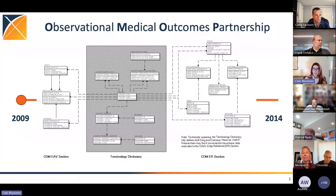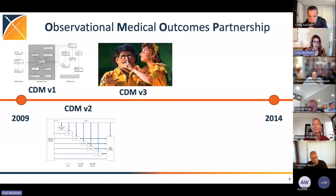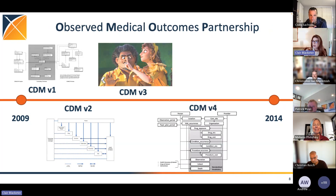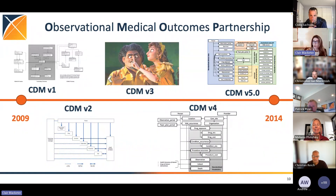Back in 2009, the Observational Medical Outcomes Partnership was formed, and this was version one of the common data model. As this experiment and this group progressed, they went through a couple of different versions. We ended in 2014 with CDM version 5.0, and this was really the first iteration of the CDM as we know it.